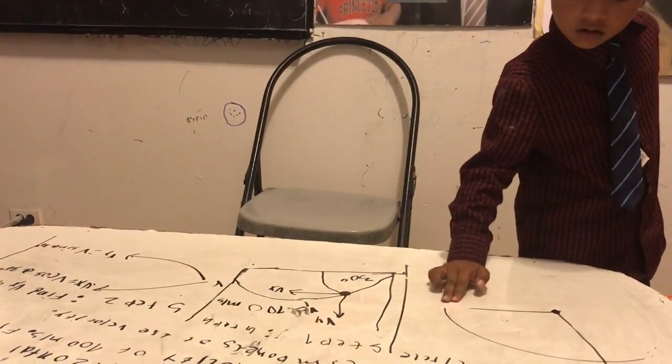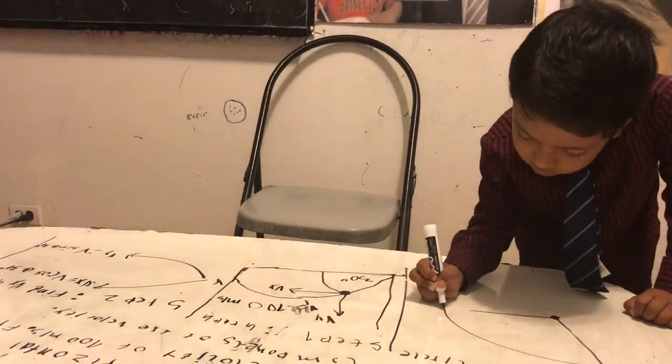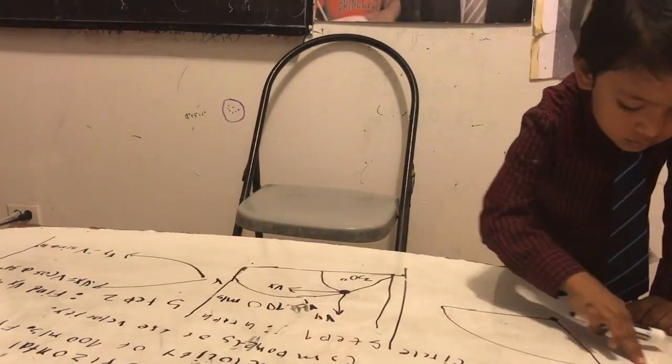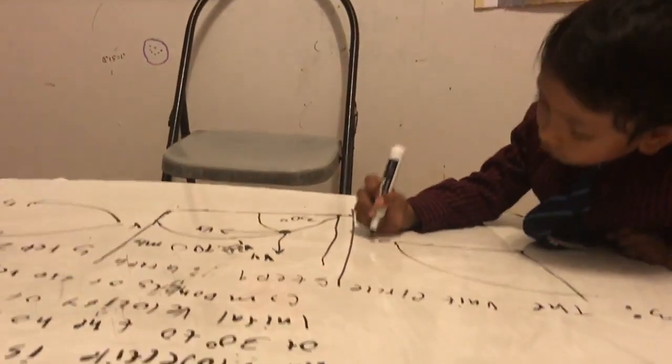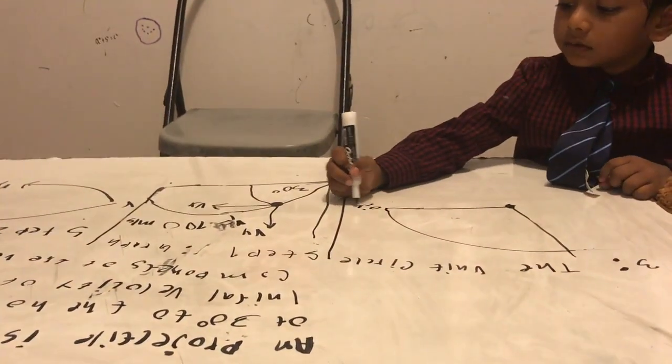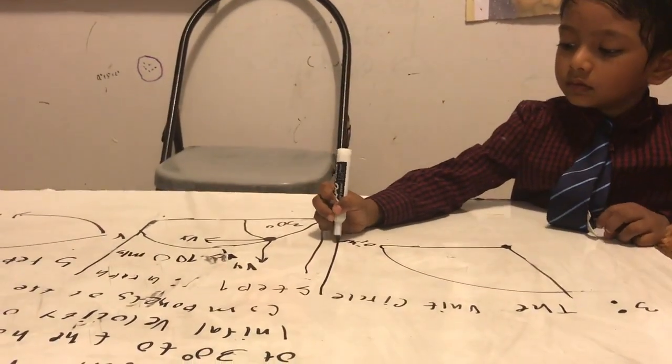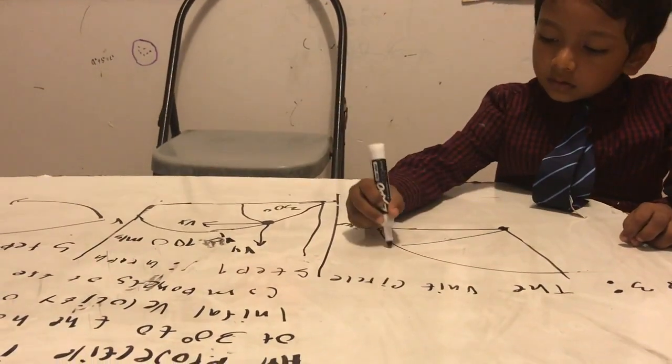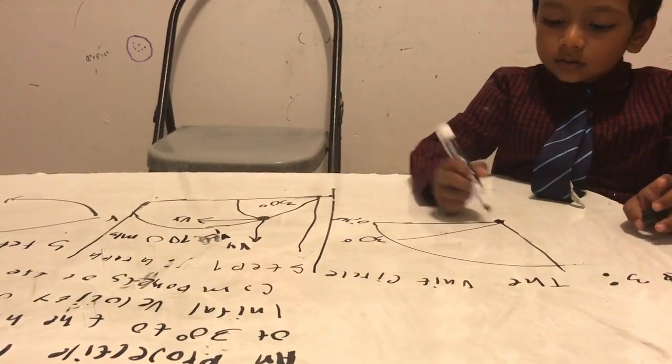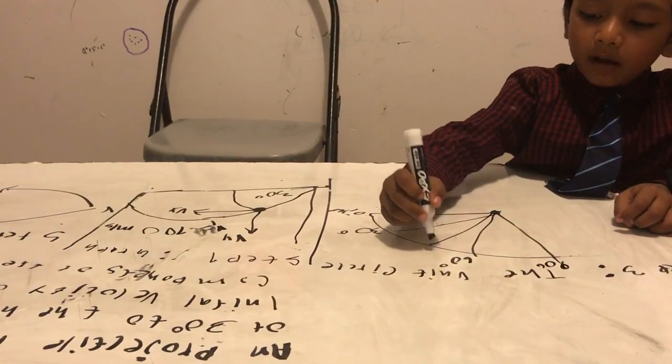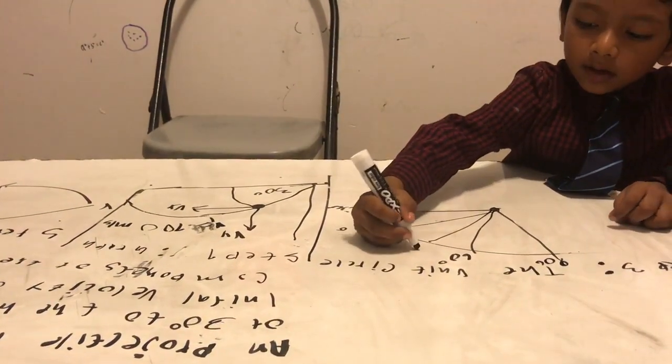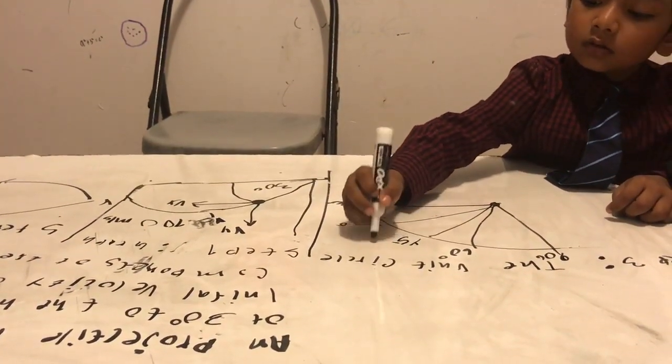This is zero degrees or 360 degrees. This is 30 degrees. This is 45 degrees. And that's 30 and 60 degrees.